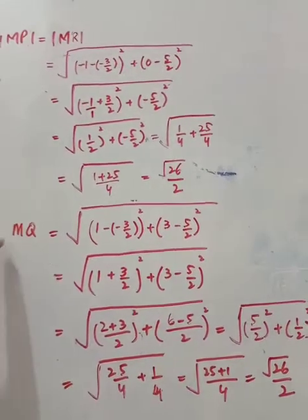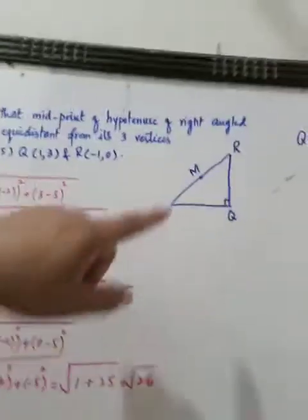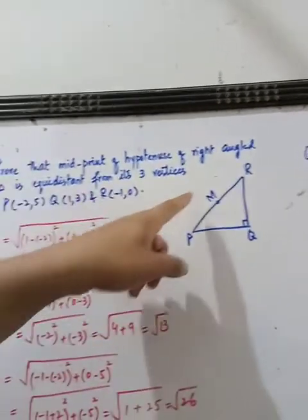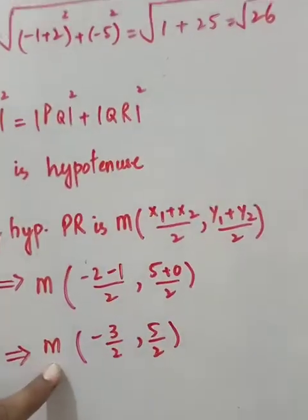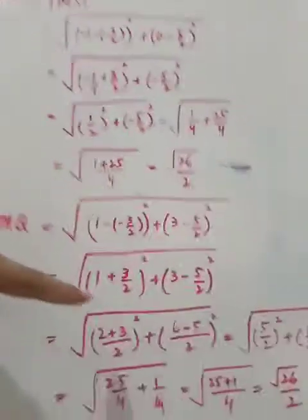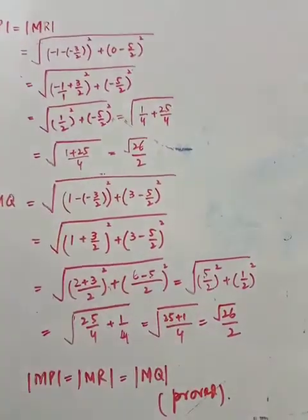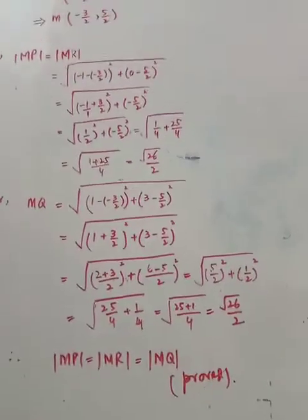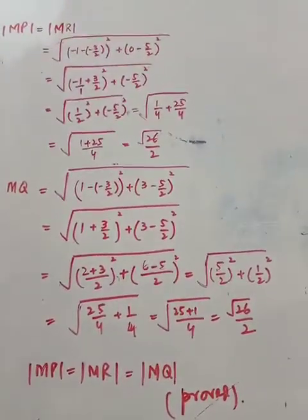Ab MQ find karte hain. Q ke points aur M ke points dono hamare paas hain. Distance formula lagaya — answer again same aaya: under root 26 by 2. Iska matlab hai MP, MR aur MQ aapas mein equal hain. Yahi humein prove karna tha — ki midpoint se P, R aur Q barabar hain.